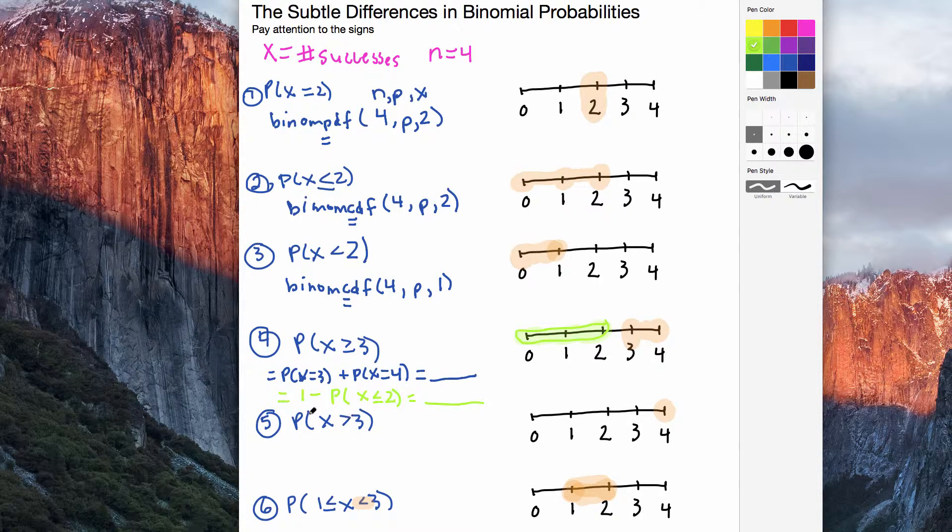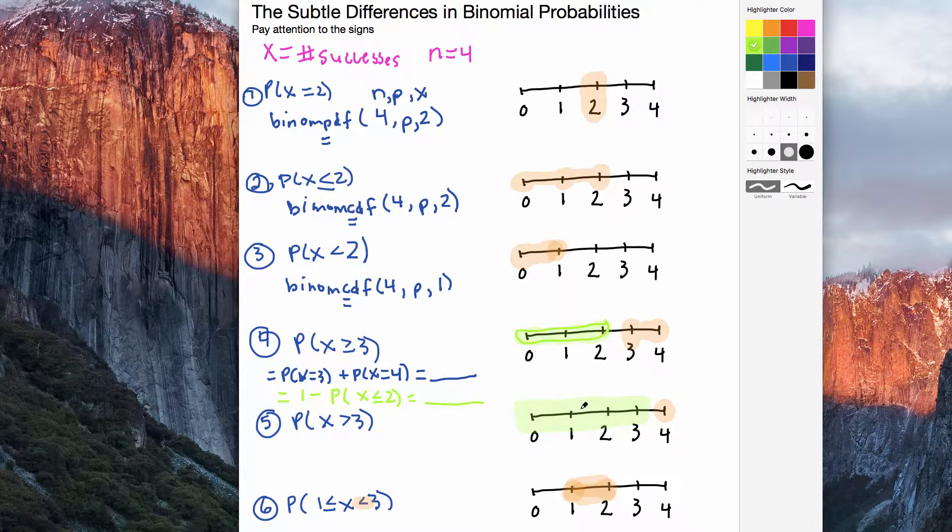Now here we have the probability of x greater than 3. I'm going to use a complement again. I've highlighted what I want. That was greater than 3 was equivalent to saying 4. So the opposite of that, the complement here, is 3 down to 0.